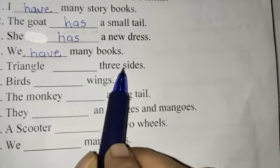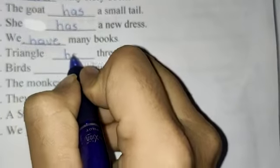Fifth, triangle blank three sides. Here, we are talking about only one triangle. So, this is singular and for singular we use has.